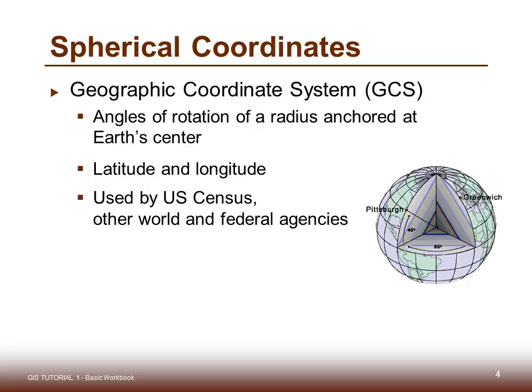It's important to be aware of the meaning of geographic coordinate systems. We've seen some information on this earlier in the semester, so part of this may be a review. But in the Chapter 5 tutorial, you'll be doing some work where you have to set the coordinate system for your map. Geographic coordinate systems deal with the angles of rotation of a radius anchored at the Earth's center, such as latitude and longitude. It's used by the U.S. Census and other world and federal agencies.